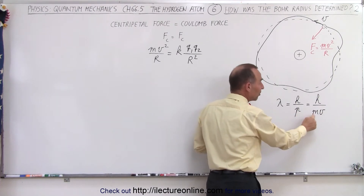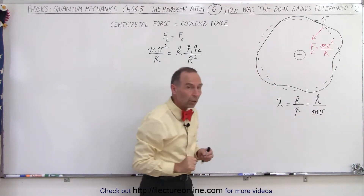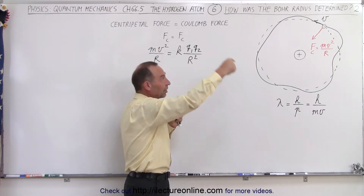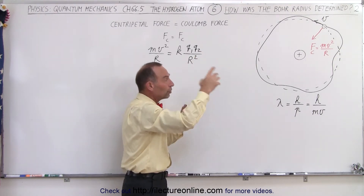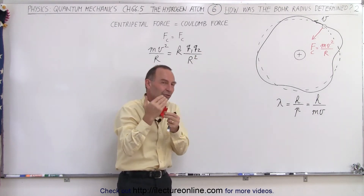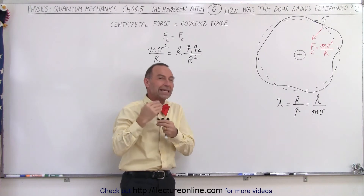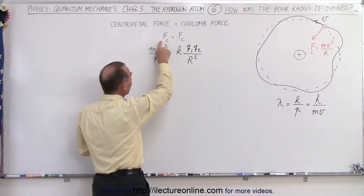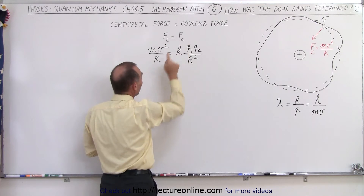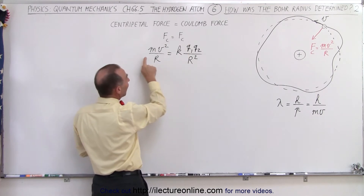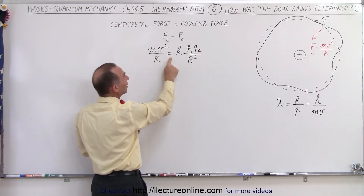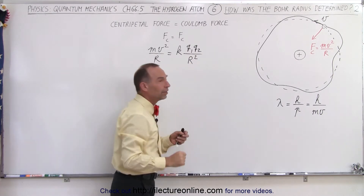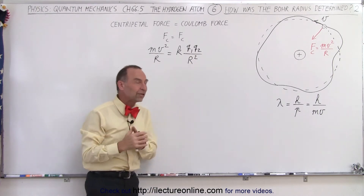Of course the momentum is the mass times the velocity. We also knew that the principle of the particle staying in orbit around the nucleus had to be determined by the centripetal force being equal to the Coulomb force. So the centripetal force being equal to the Coulomb force meant that mv² over r had to equal kq₁q₂ over the radius squared.